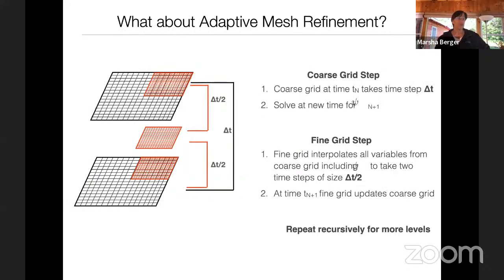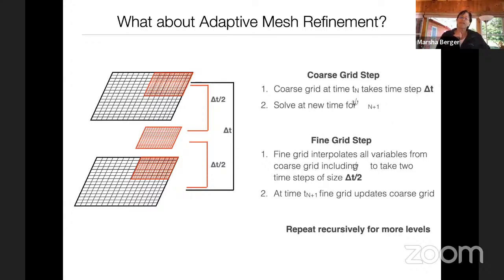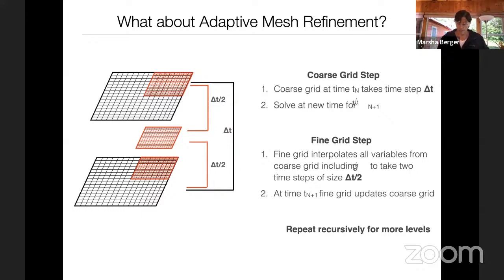For adaptive mesh refinement with the Boussinesq equations: the coarse grid takes a time step delta T, then we solve for psi at the new time. Psi is stored as an extra variable at old and new time so we can solve the implicit system on the fine grid and interpolate ghost cells for the intermediate time step at delta T/2. For more than two levels, we repeat recursively. So instead of three equations (H, U, V), we now also store psi.